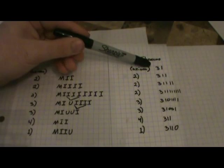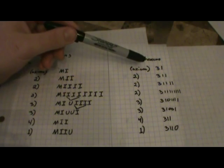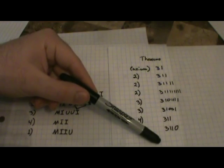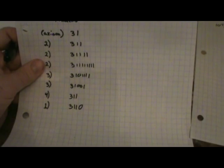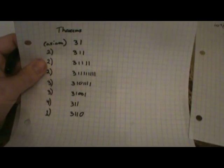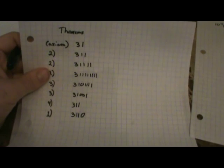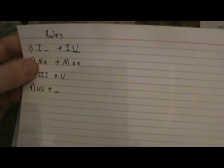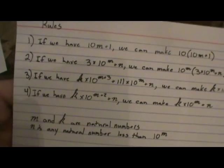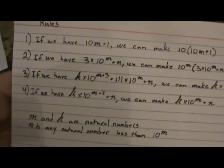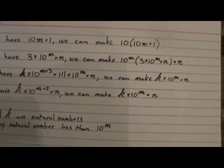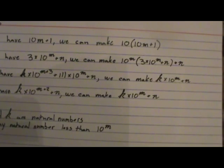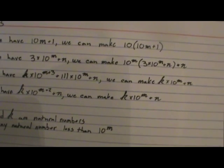We've already gone over the typographical system, and if instead you want to use arithmetic, here's the same exact thing. Just to get a better sense, we're going to use one example: going from 31111 to a 3 with eight ones at the end of it. I know it's simpler to just remember that anything after the 3 you double, but in order to keep it purely mathematical, the rules say that if we have 3 times 10 to the m plus n, we can make 10 to the m times 3 times 10 to the m plus n, plus n. What on earth does that mean?